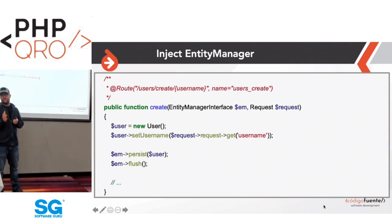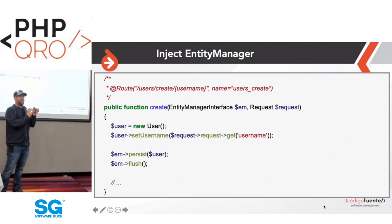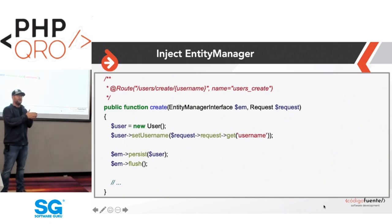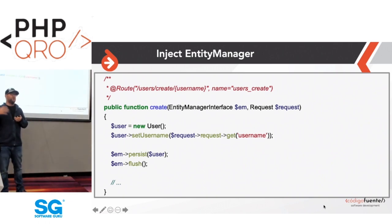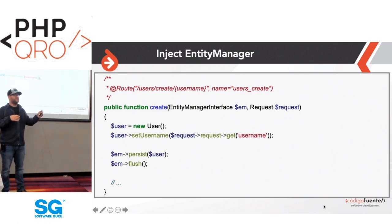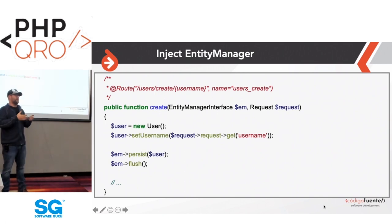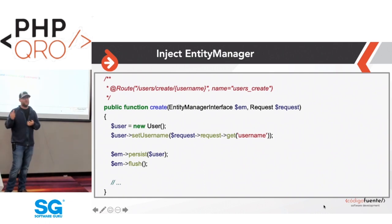The difference from the DBAL approach is that persist doesn't write to the database immediately — it tells Doctrine to track the object and follow its changes. Since it's a brand new user object, Doctrine knows it needs a new INSERT. When you call flush, Doctrine compares the state of entities in memory to what you've changed, and in this case generates an INSERT query into the user table with the username provided.